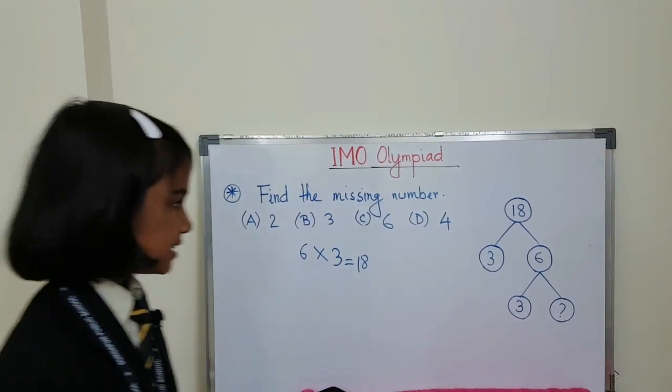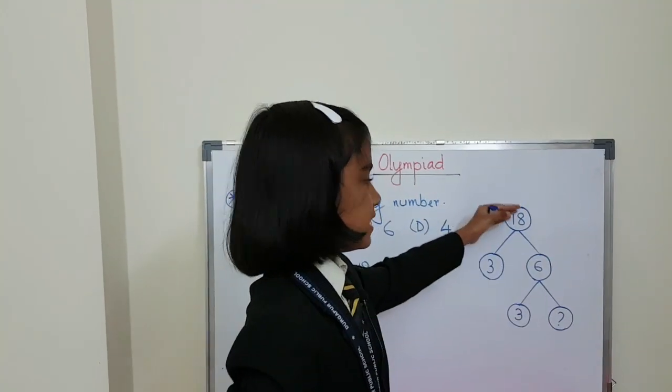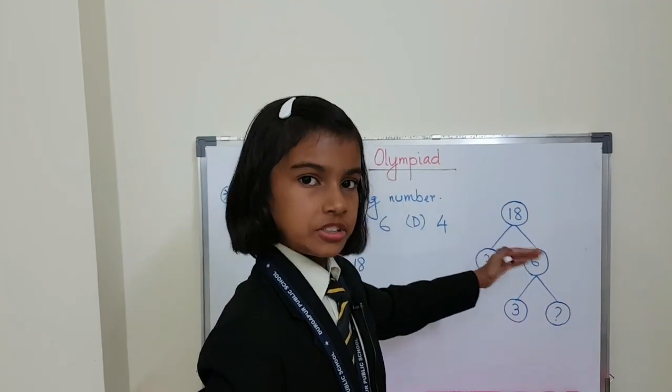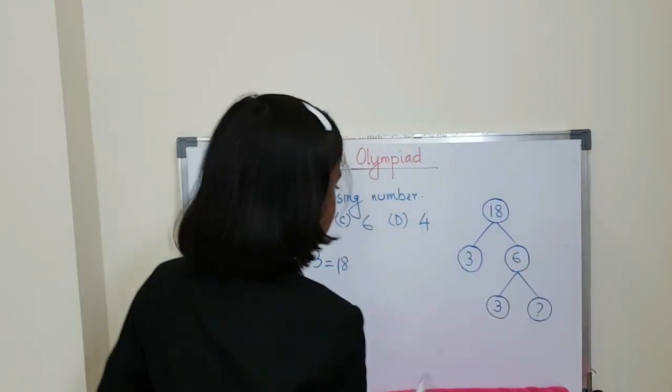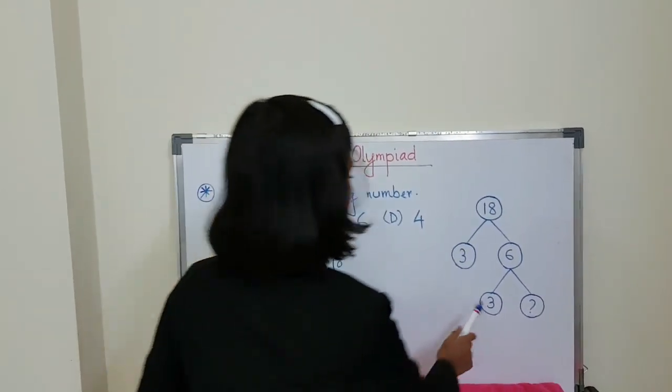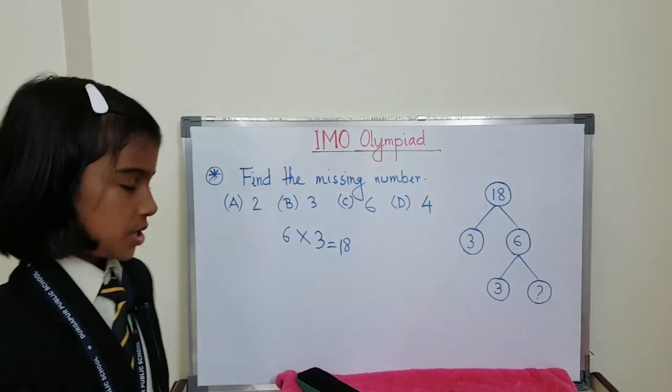6 threes are 18 means in these two circles, its factors are there. 18's factors are there in these two circles. Then in 6 there are also two circles, 3 and that is the question mark. We have to find that one.